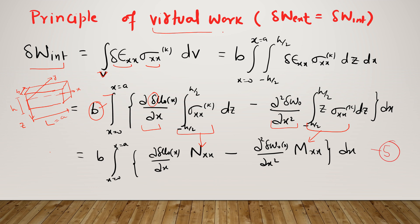We will now apply the principle of virtual work. The internal virtual work is the integral of δepsilon_xx · sigma_xx⁽ᵏ⁾ over the volume. Integrating over the beam width b and thickness from −h/2 to +h/2, and length from 0 to a, we get the integral of δepsilon_xx · sigma_xx⁽ᵏ⁾ dz dx. We then substitute δepsilon_xx by putting the expression one part at a time.